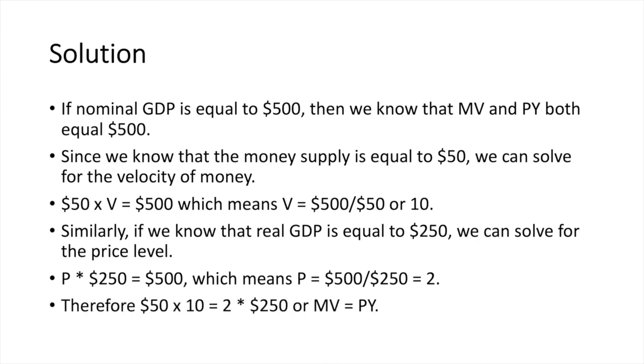Therefore, let's go back to the original equation for MV equals PY to check to see if we did this correctly. Basically, M, or $50, times 10, which is our velocity of money, should equal 2, which is our price level, times $250. Again, remember, this is just MV equals PY. It does check out, so we know that we've got our answer correct.